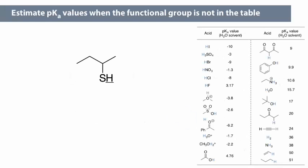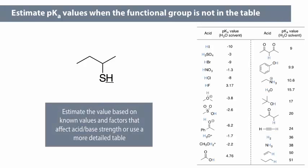Now what do we do when the functional group in question is not on the pKa table at all? We will come back to this skill after we learn about the properties that affect acid and base strength.